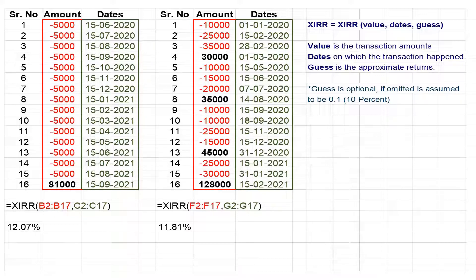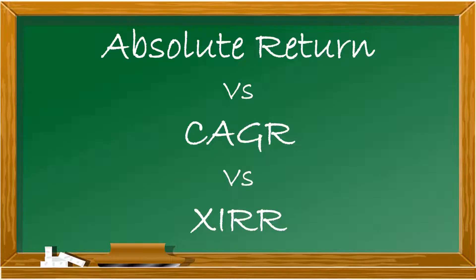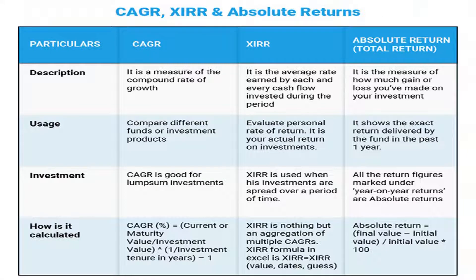The XIRR in the first case is 12.07%, and in the second case is 11.81%. Lastly, let us look at the difference between all these three types of returns, based on four different factors: description, calculation, usage, and investment. Under usage, CAGR is used for comparison across various investment options, and XIRR is used for evaluating your personal rate of return, with absolute return being the total increase over a particular period. Under investment, while CAGR is good for lump sum investments, XIRR is good for investments which are spread over a period of time.